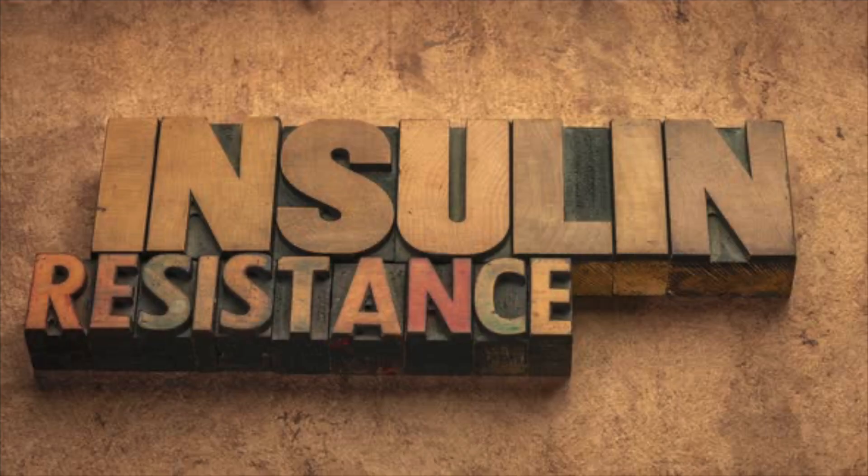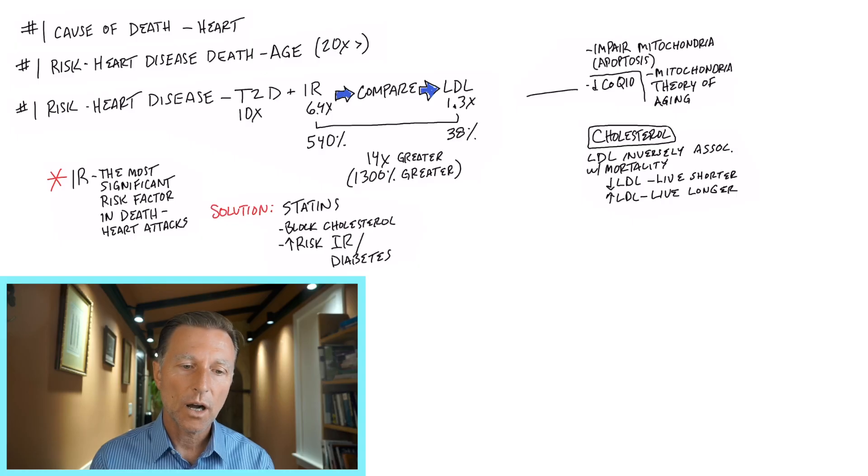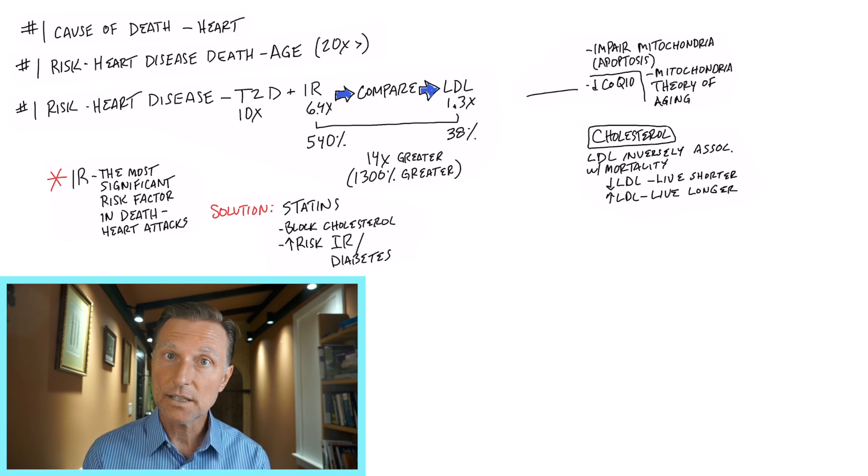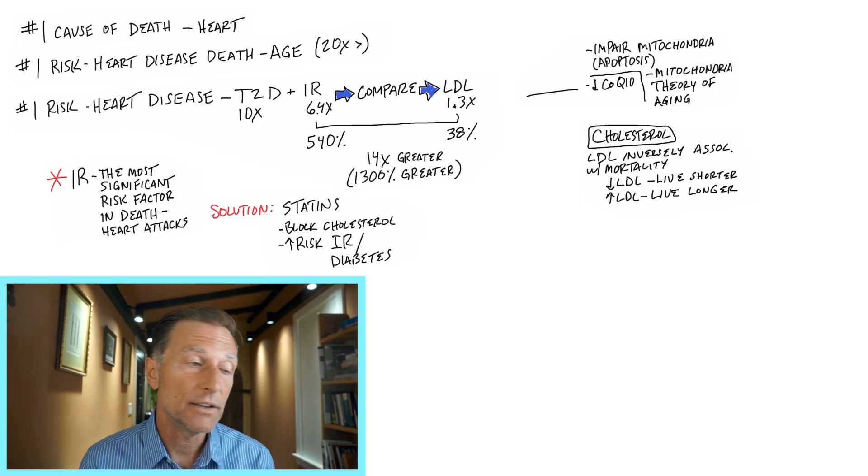So insulin resistance is the most important risk factor for heart disease. And if you want to live longer, all you have to do is improve insulin resistance. Make your insulin more sensitive, less resistant, stabilize your blood sugars. That is the most important action out of anything you can do.